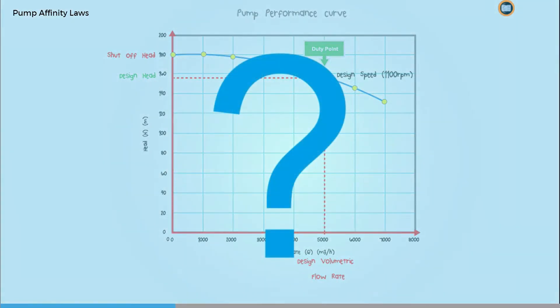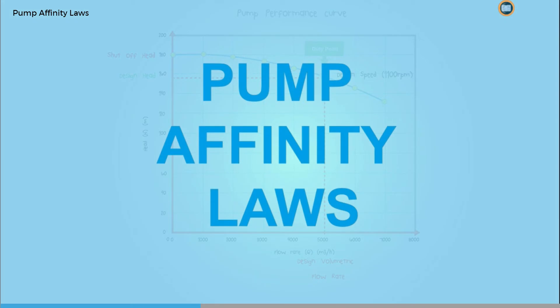So how can we use the design head and flow rate to work out the flow rate and head at any particular rotational speed? We can do this by using the pump affinity laws. These explain how flow rate, head and power consumption are affected by changes in rotational speed.